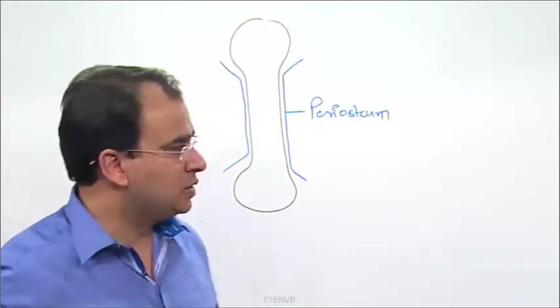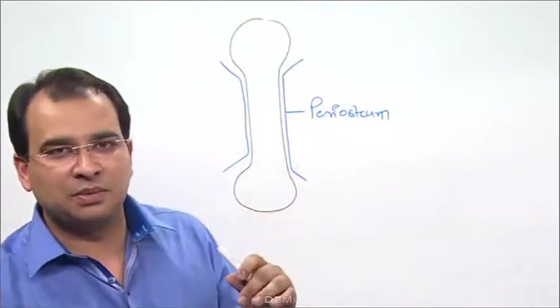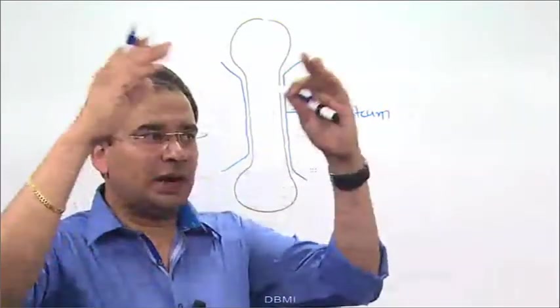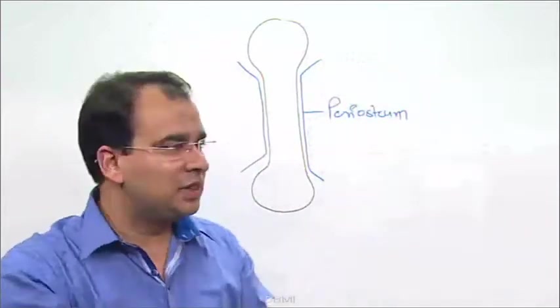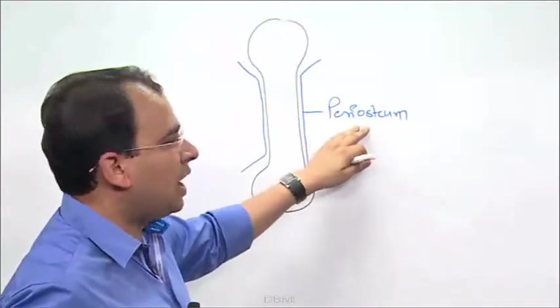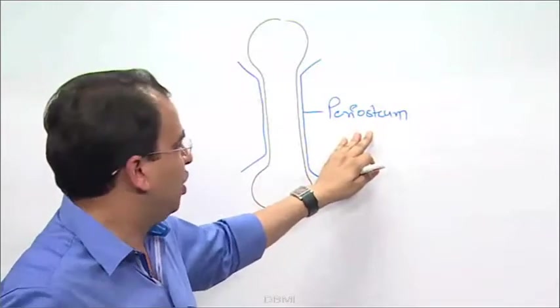You may have heard of two words, one is periosteum and endosteum. If it is covering from the inside, let's say the skull bone is covered from the inside with the fibrous layer, we call it endosteum. And if it is on the outer surface, we call it periosteum.